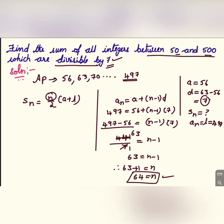Let us substitute these values in Sn formula. Sn is equal to 64 by 2 and a is 56 plus last term is equal to 497. Now 2 into 32, 32 into 56 plus 497 is equal to 553. And if you multiply 553 into 32 we will get 17,696 which is Sn.